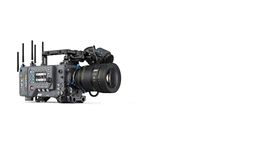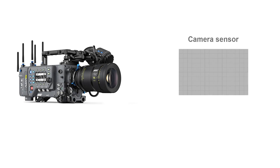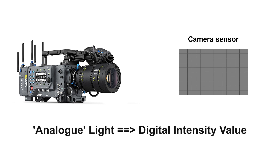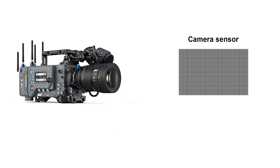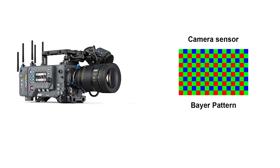Digital camera sensors consist of an array of millions of light-sensitive elements called photocytes that convert the light exposed to the sensor into an array of digital intensity values. So far the camera is just capturing a black and white image — brighter or less bright.